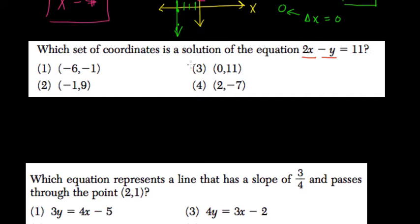So let's try point 3. If we double our x value, we get 2 times 0. If we subtract 11, what do we get? 2 times 0 is 0, minus 11 is negative 11. We want to get positive 11, so that point doesn't work.